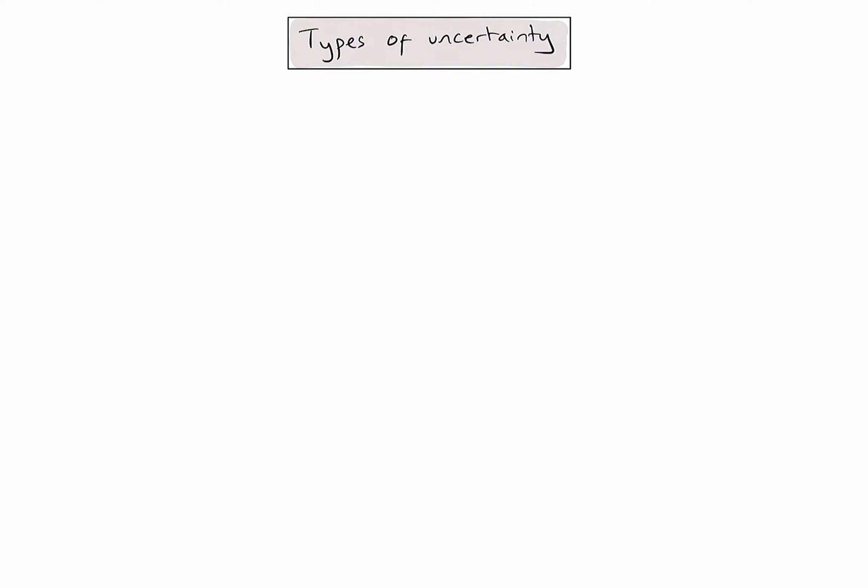When talking about uncertainty, there are actually three types of uncertainty we need to be aware of in IB chemistry. To identify these three types of uncertainty, it's helpful to use an example.